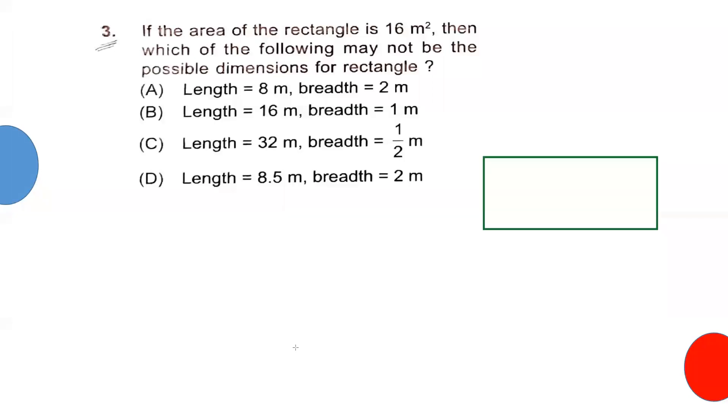If you have a rectangle with area 16 meter square, it can have different length and breadth like 8 and 2, or 16 and 1. If it's 4 and 4, it becomes square. Or 32 and 0.5 is possible because you get 16. But we have 8.5 times 2, which gives 17, not equal to 16. This was the most easy question till now.